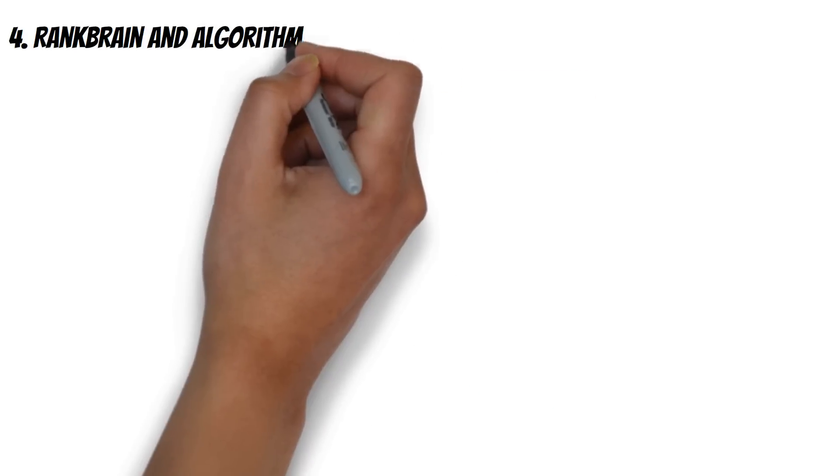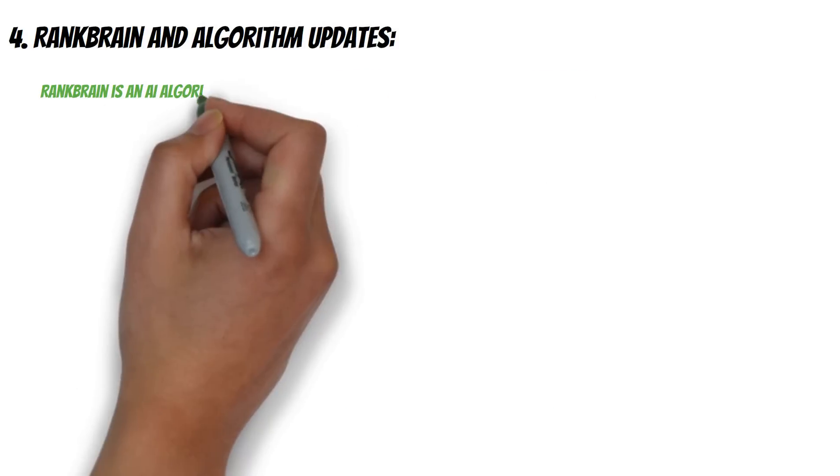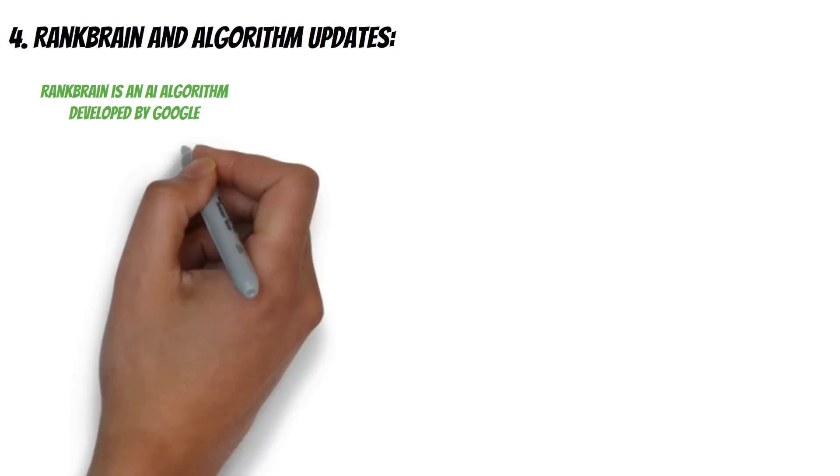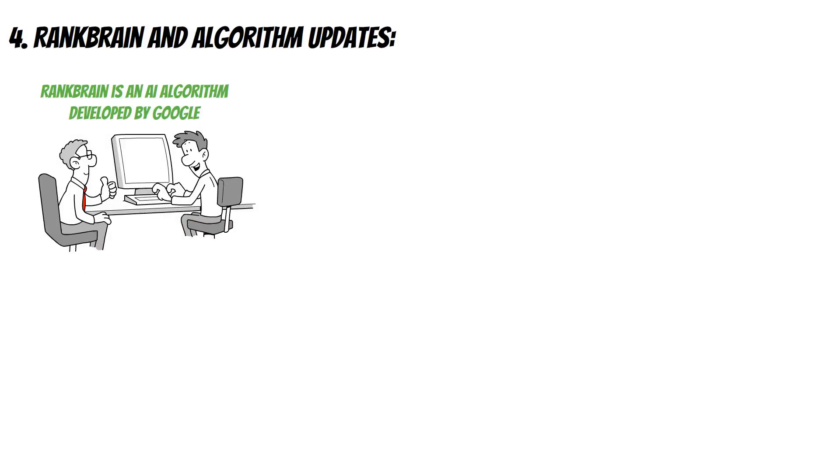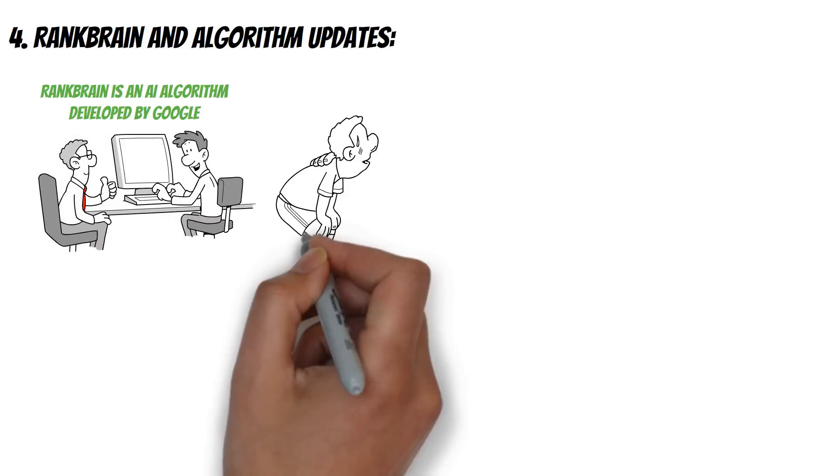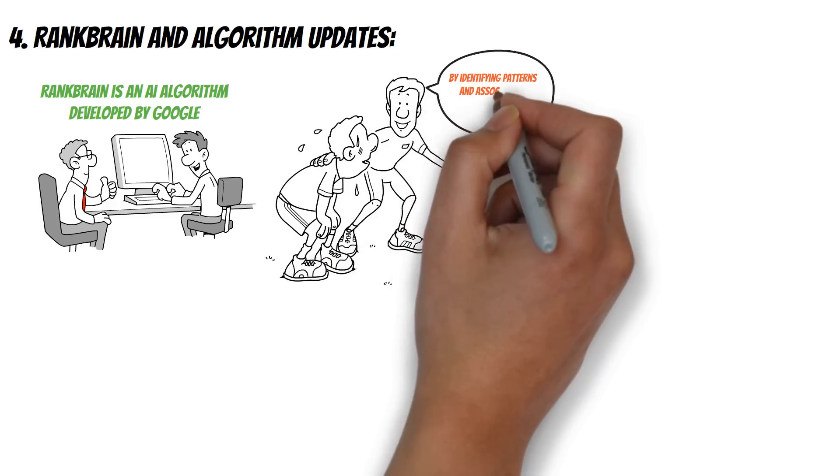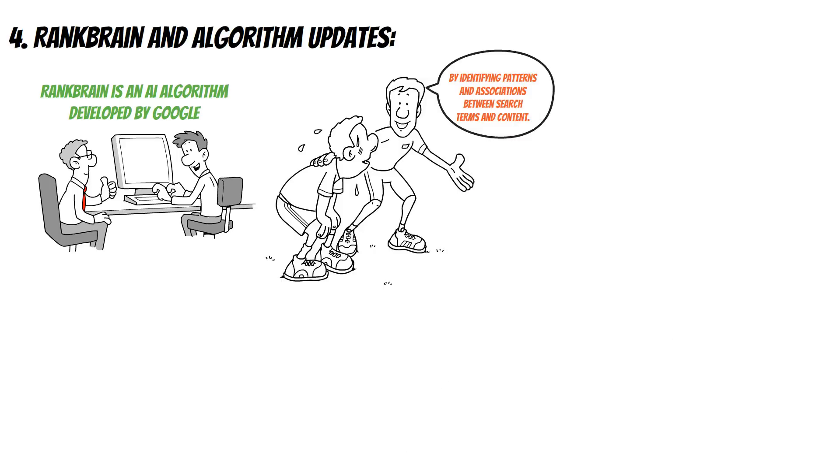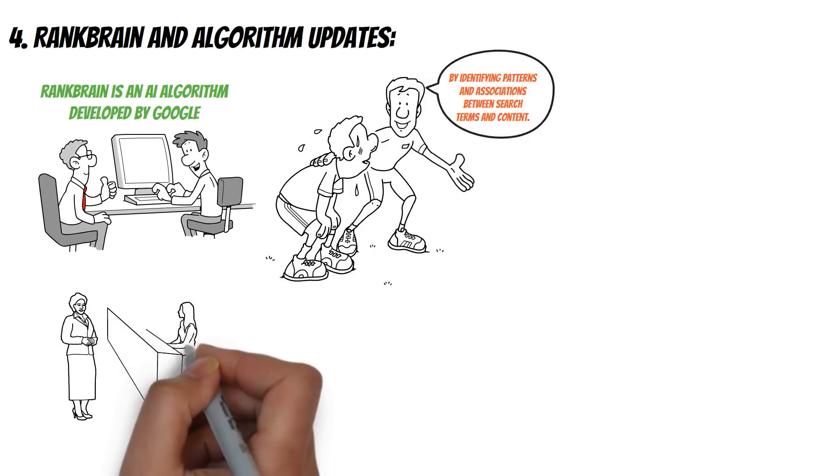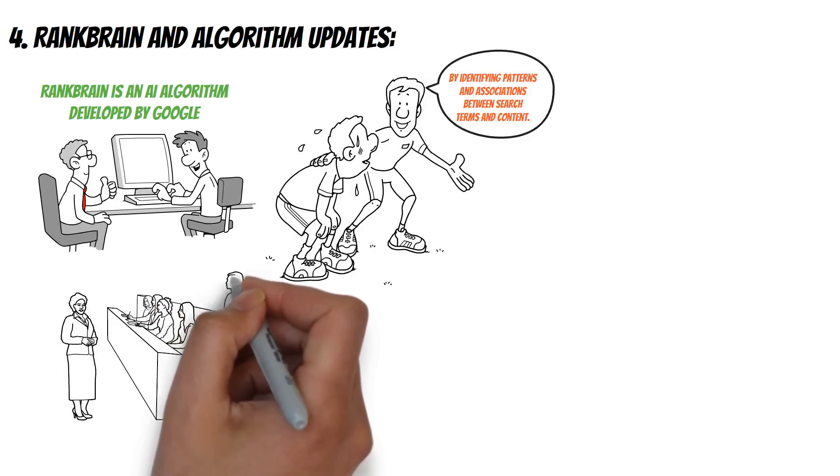RankBrain and Algorithm Updates: RankBrain is an AI algorithm developed by Google which uses machine learning to understand and interpret search queries. It helps Google deliver more relevant search results by identifying patterns and associations between search terms and content. RankBrain has become a crucial component of Google's search algorithm, influencing website rankings.